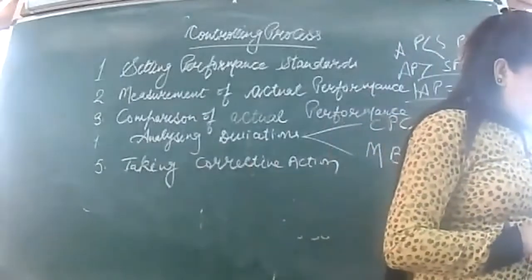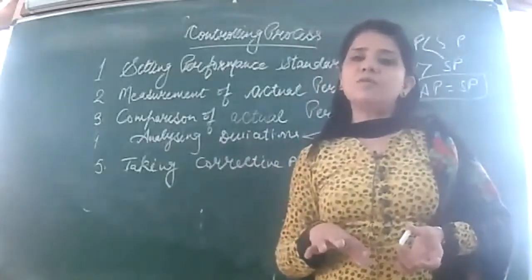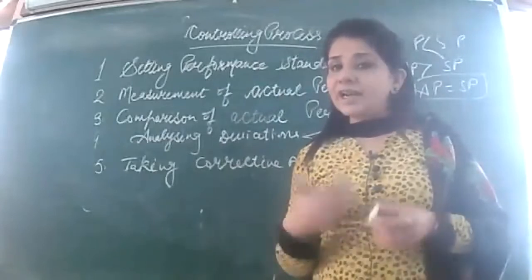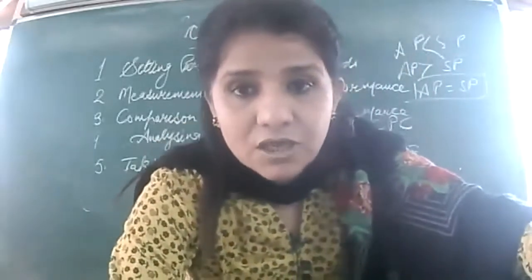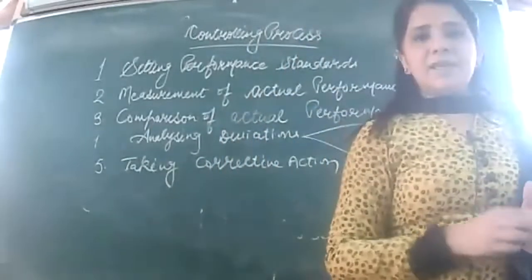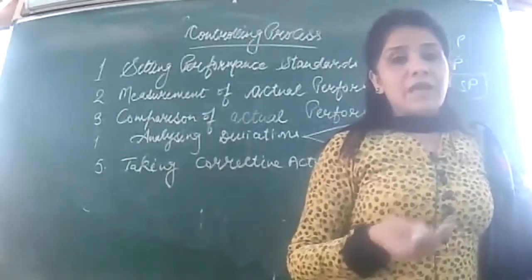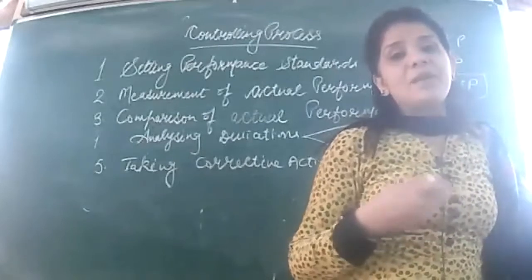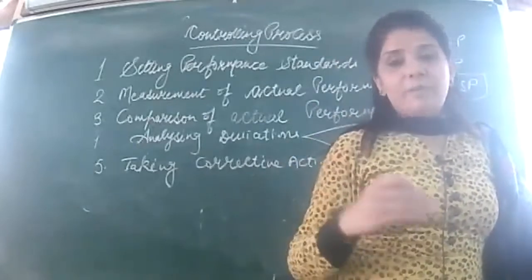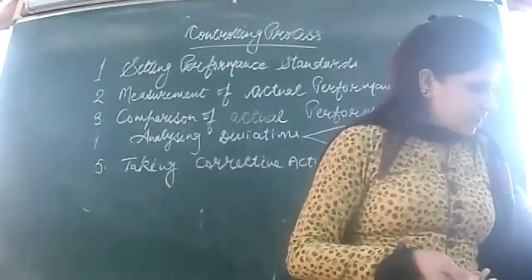Some deviations in performance can be expected in all activities. For example, if I set a target of 20 lakh profit and it comes to 19 lakh, that's fine. Even 18.5 lakh is fine. But if it falls to 15 lakh, then it is a matter of discussion. We accept deviations within an acceptable range — like one or two percent. The deviations in key areas of business need to be attended more urgently.